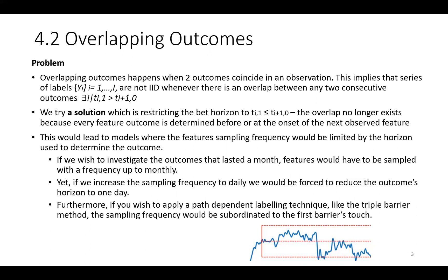We try a solution which is restricting the back horizon such that the overlap no longer exists, because every feature outcome is determined before or at the onset of the next observed feature. This would lead to models where the feature sampling frequency would be limited by the horizon used to determine the outcome.